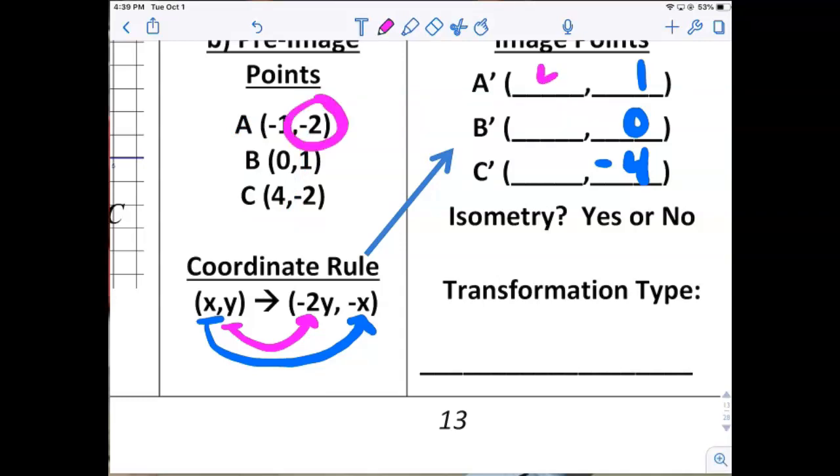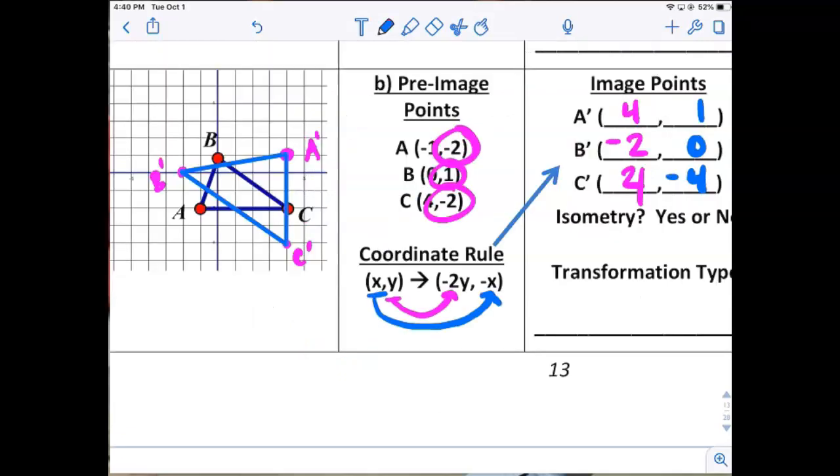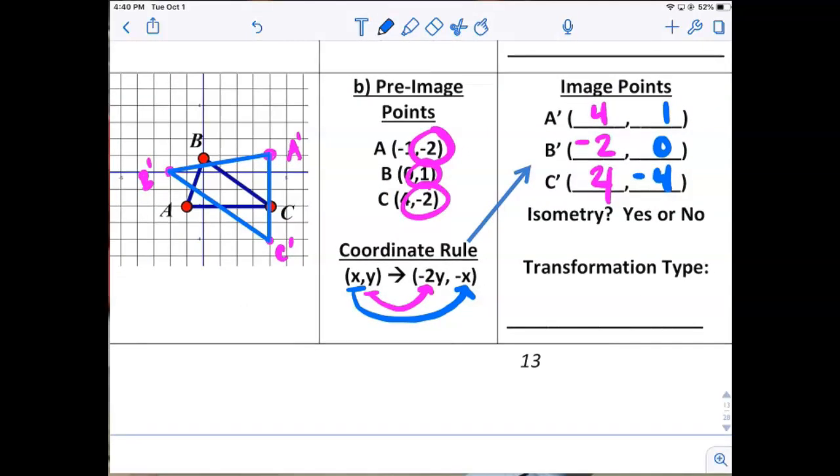So negative 2 doubled is negative 4, change the sign to positive 4. One doubled becomes 2, change the sign to negative 2. Negative 2 doubled becomes negative 4, change the sign to 4. Now I'll plot them.